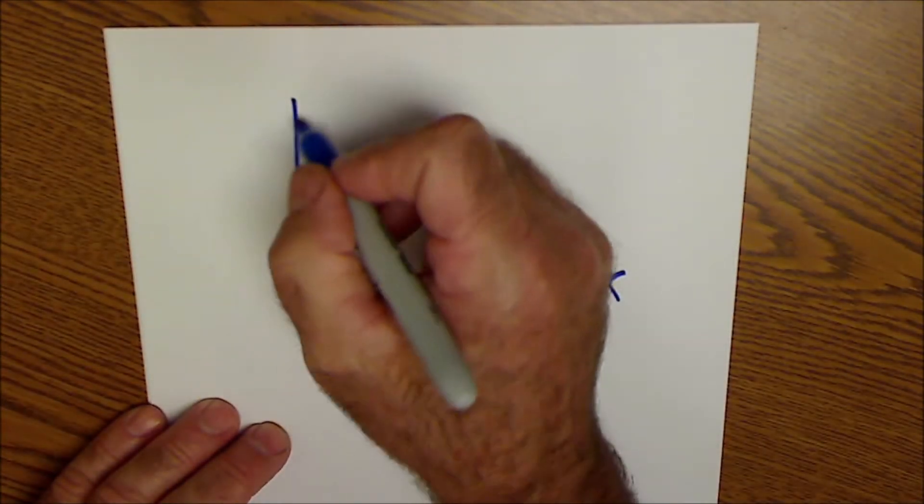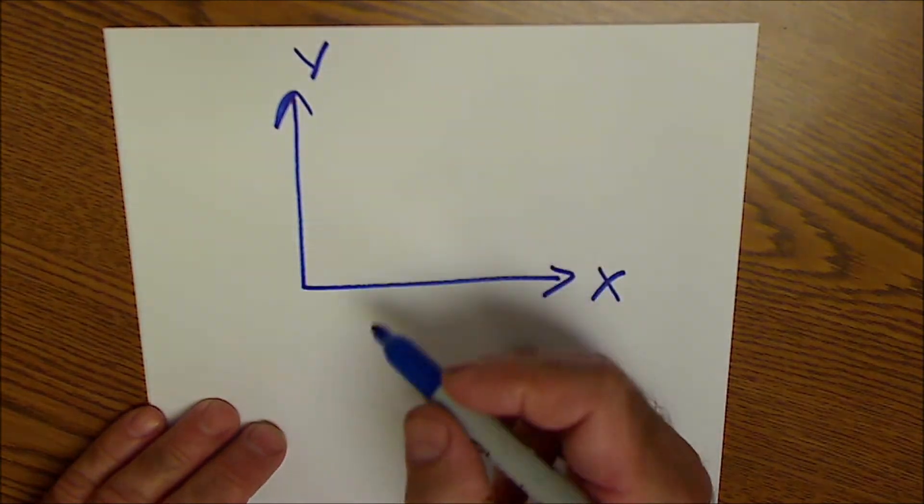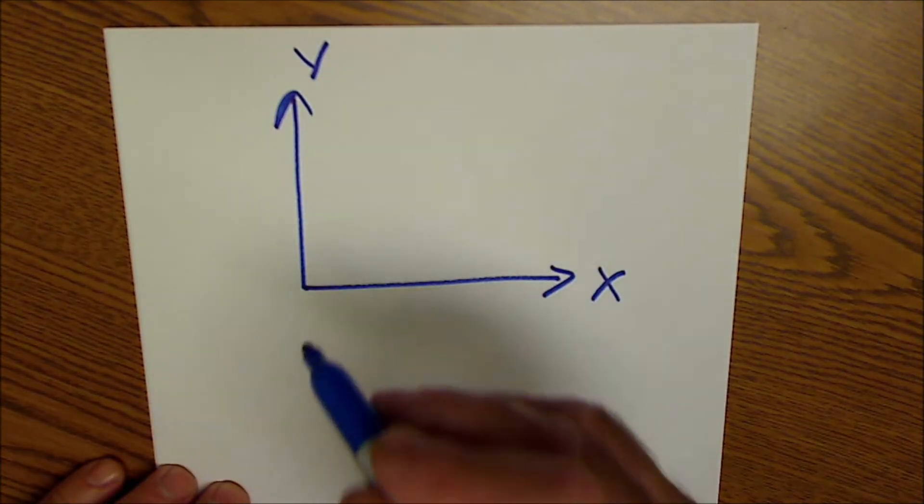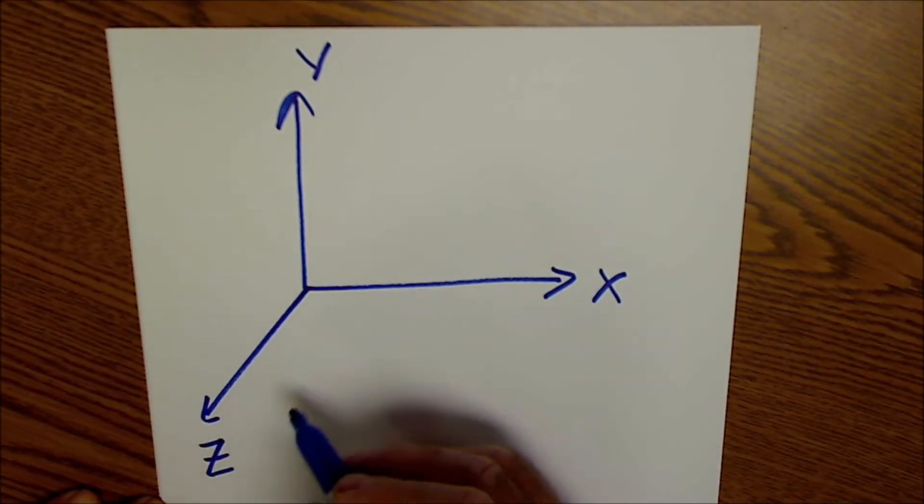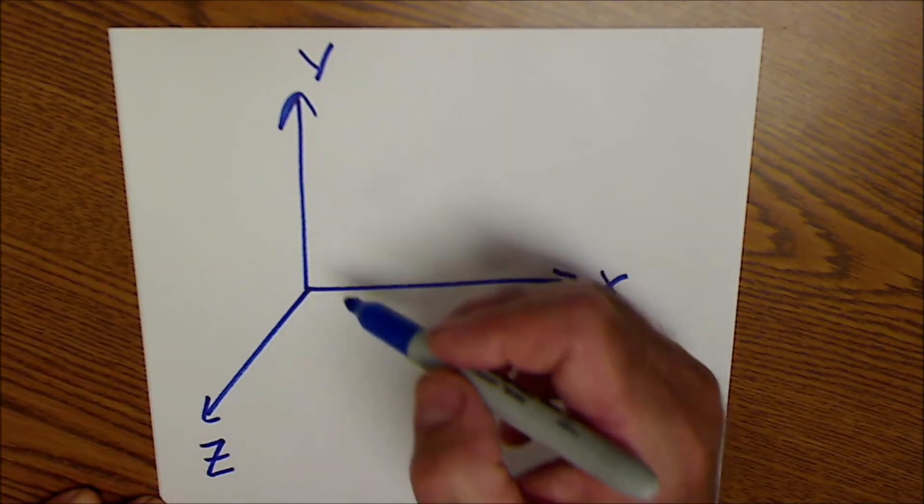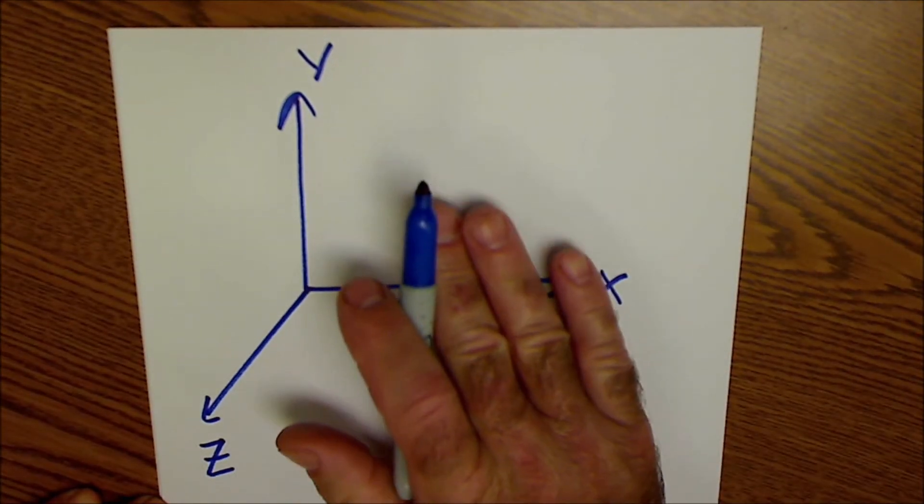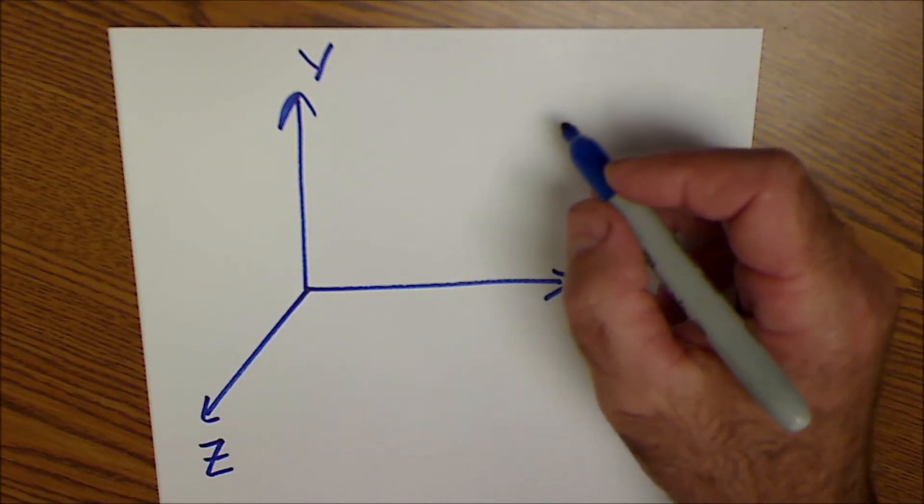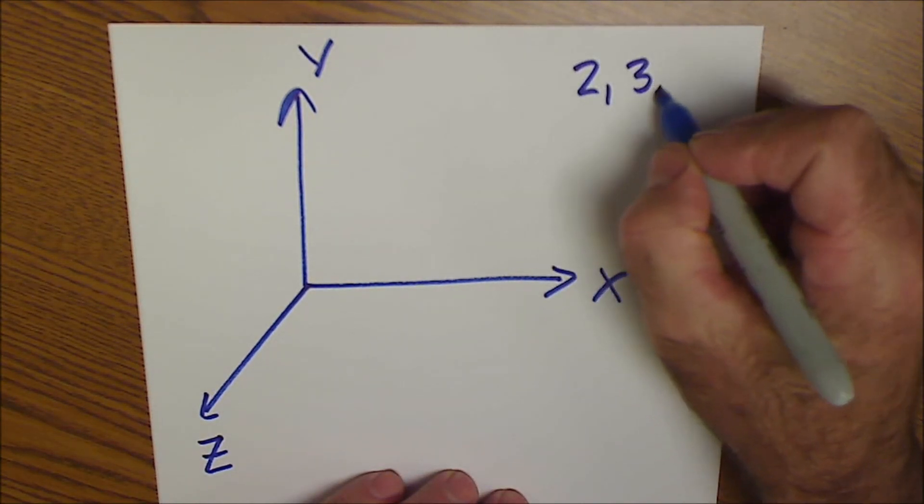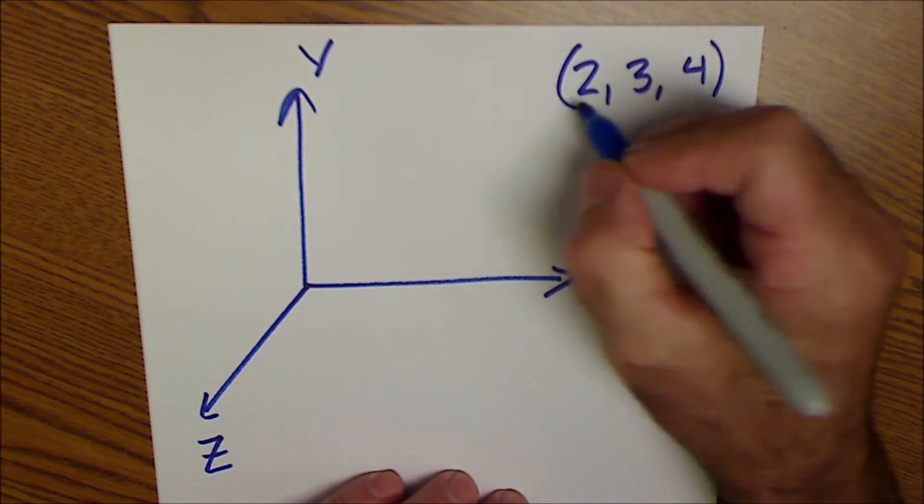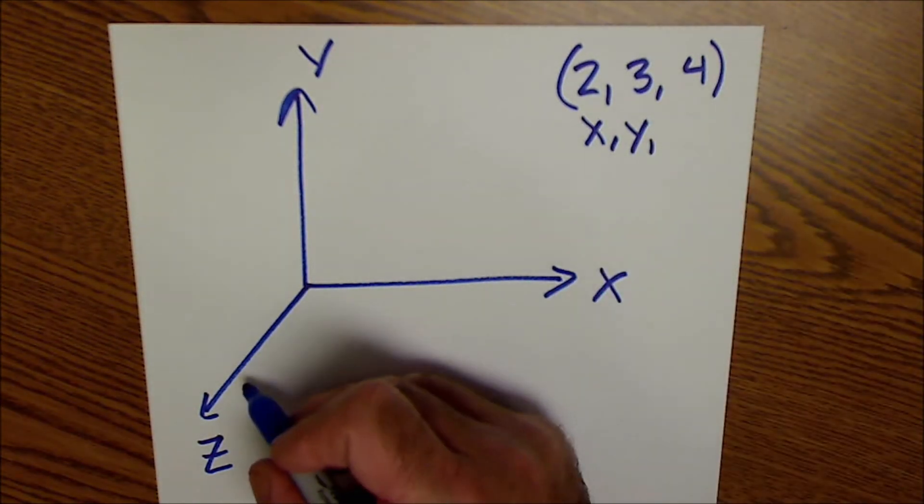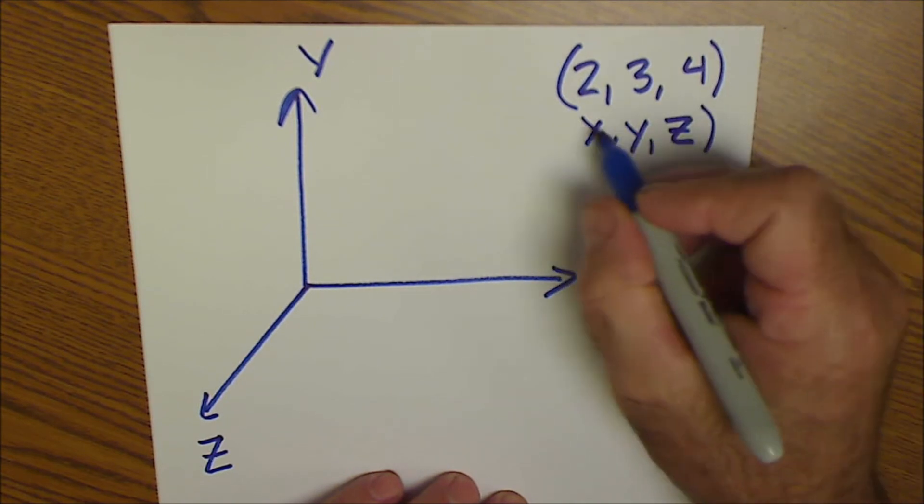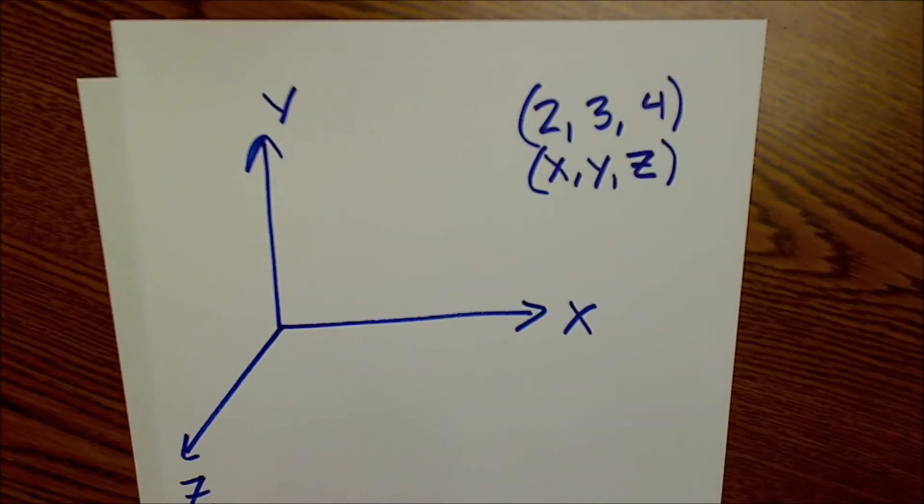So again, horizontal is X. Vertical is Y. And now I'm coming out. I'm really coming straight up here. So I draw it flat, but it's a Z axis. And it's coming straight up. And then the way I draw this in two dimensional plane like this is, let's say now I have the coordinate 2, 3, 4. Before that coordinate was X, Y. And it's still the same. I'm just adding a third axis. Three dimensions. So this is Z. And they're always in that same order. X, Y, Z. Just like they are in the alphabet.